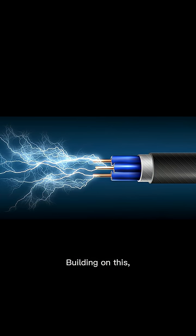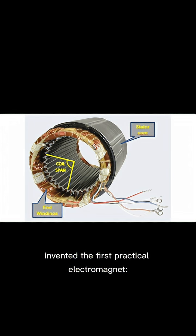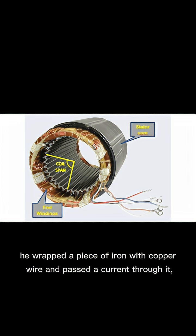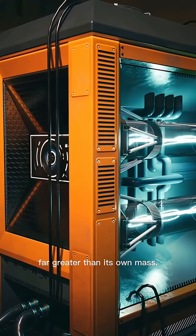Building on this, in 1824, William Sturgeon invented the first practical electromagnet. He wrapped a piece of iron with copper wire and passed a current through it, demonstrating that the iron became magnetized and could lift weights far greater than its own mass.